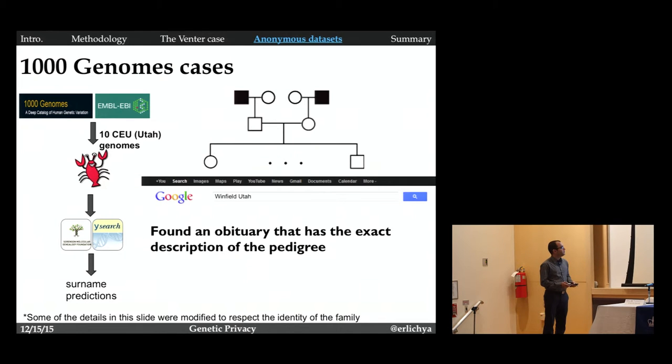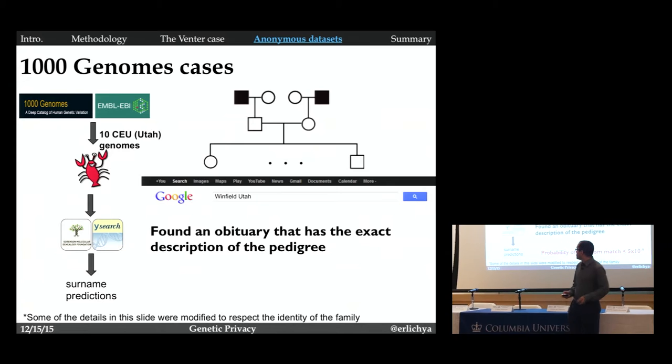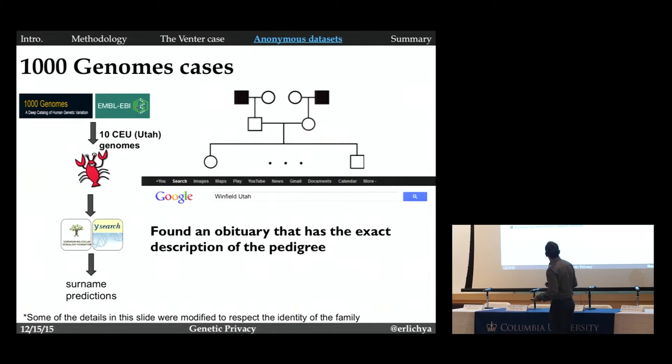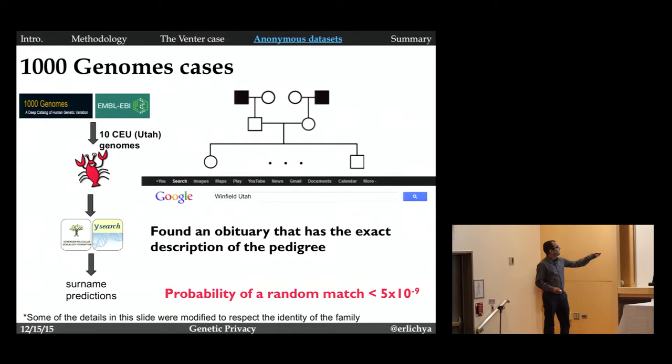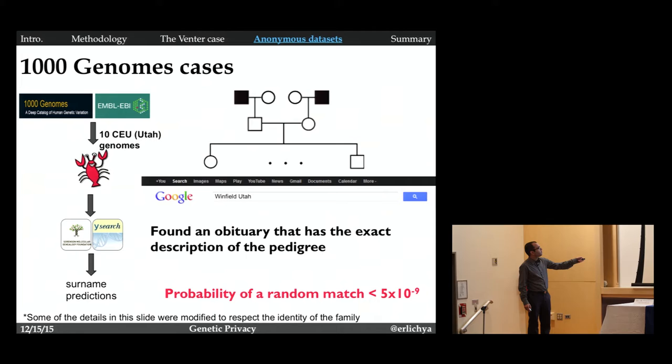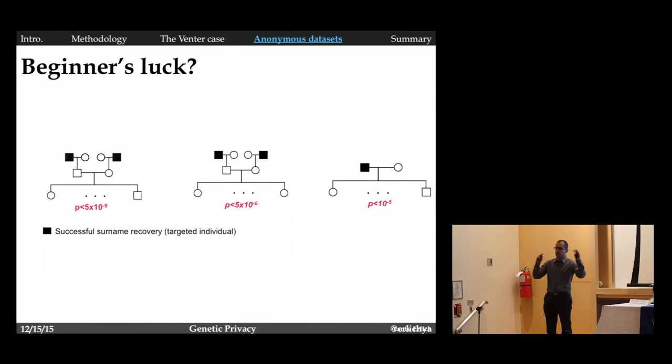We concluded that if I scanned all households in the United States, the probability of a false positive would be less than 5 times 10 to the minus 9 that I found the wrong family, based on all the details we have. Very low probability. Then we submitted the paper, and it was rejected because the reviewer said, you just showed that on one pedigree. Can you replicate? Maybe it was beginner's luck. So we said, yes, let's do that again and again. We just recovered more and more families in the 1,000 genomes. We just got bored after the third family and said, okay, that's enough.